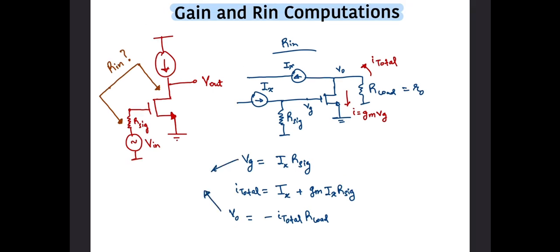Thus, the voltage across the input and the output node is ix times R_sig plus I_total times R_load. Dividing this by ix, we get the input impedance across the gate and drain to be R_sig plus gm·R_sig·R_load plus R_load. This expression might ring a bell, as it looks just like the output impedance of a two-stage cascode.